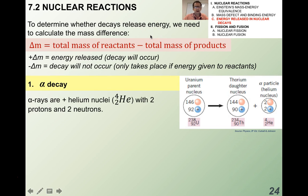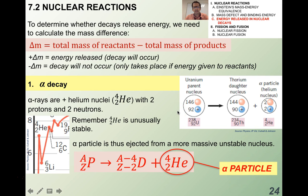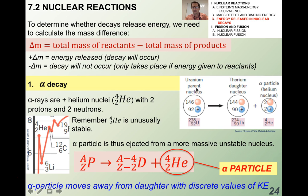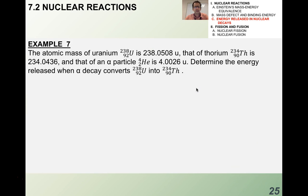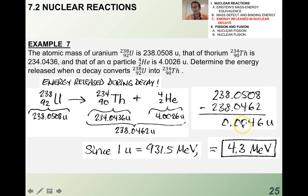In alpha decay, alpha particles are helium nuclei with two protons and two neutrons. Helium is unusually stable relative to its neighbors because of that spike in binding energy. An alpha particle is ejected from a more massive, unstable nucleus, and moves away with discrete values of kinetic energy. For example, the energy release when alpha decay converts uranium-235 into thorium: the mass difference is 0.0046 atomic mass units, which converts to the energy release in mega electron volts.